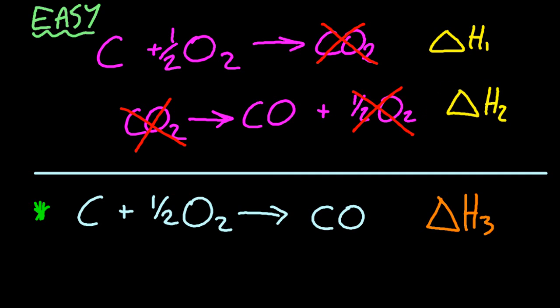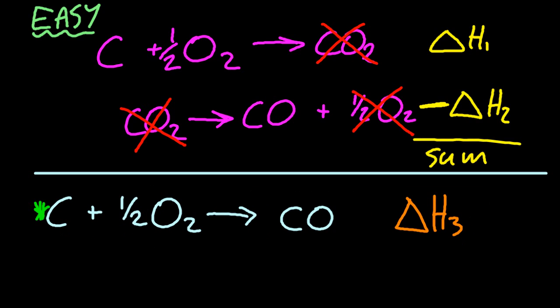So I've manipulated the top two equations. Now I did flip H2, so I have to do something to the delta H value. So if I flip it, I'm going to reverse the sign, in this case make it negative. Then add everything up, and that should give you the delta H for your target equation.